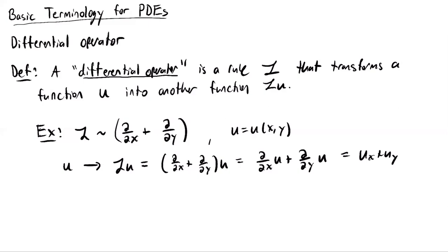This is a good example of exactly what these things are. I have an input function and a rule associated with my operator. The rule transforms my input function into this new quantity, which depends on U in some way because I've taken derivatives of the original function.